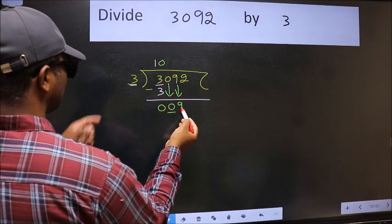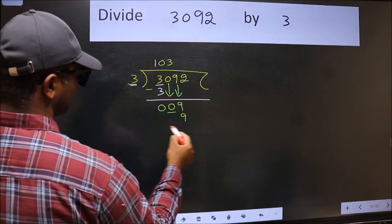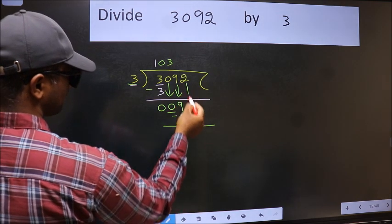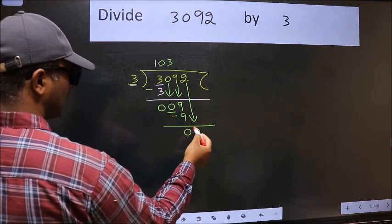Now 9. When do we get 9 in the 3 table? 3 times 3 is 9. Now we should subtract. We get 0. After this, bring down the beside number, so 2 down. After this step,